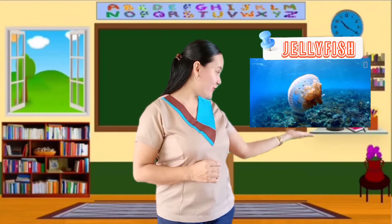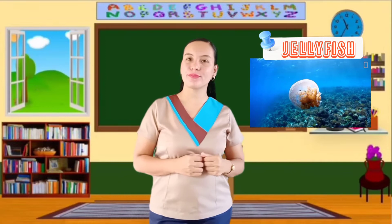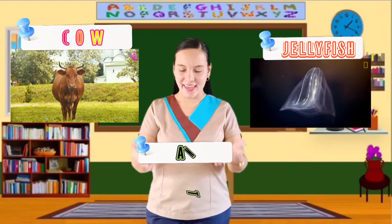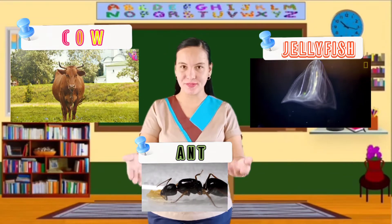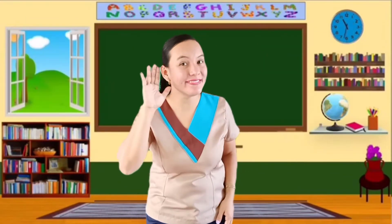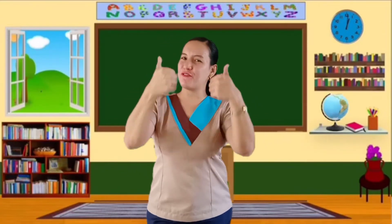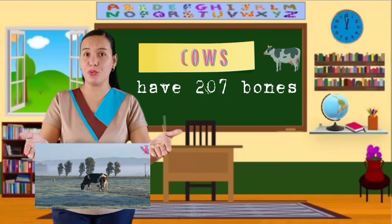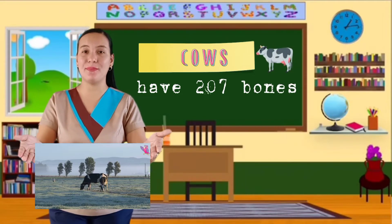And here's our second set: Jellyfish, Cow, Ant. Very good! The answer is cow. Cows have 207 bones.